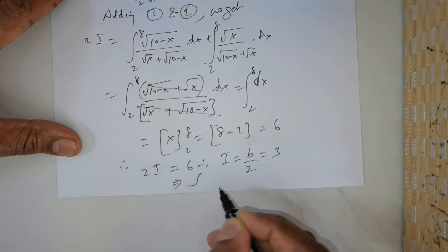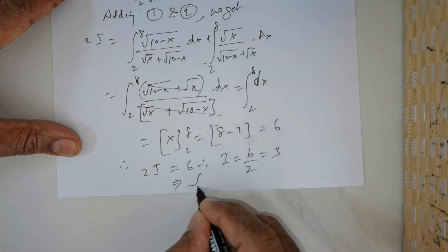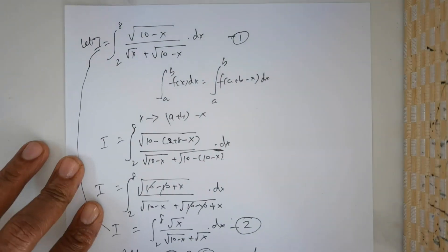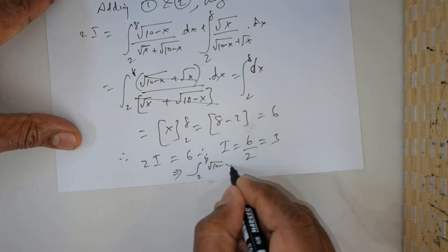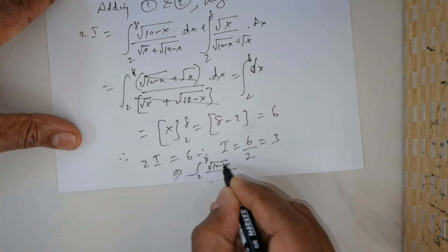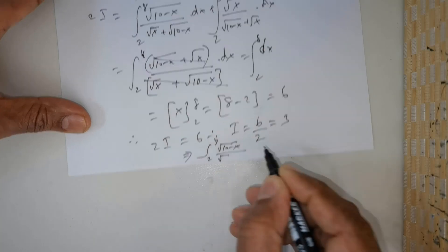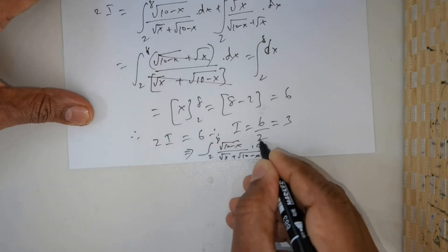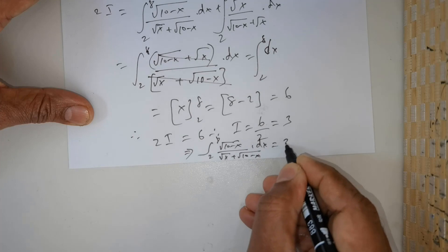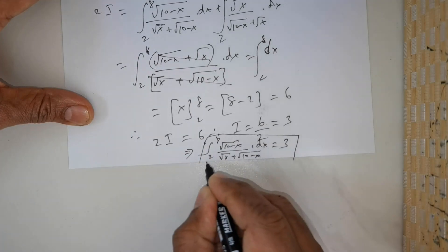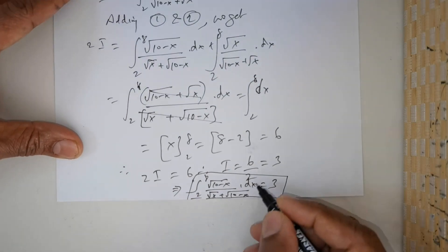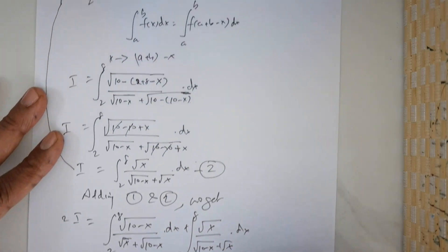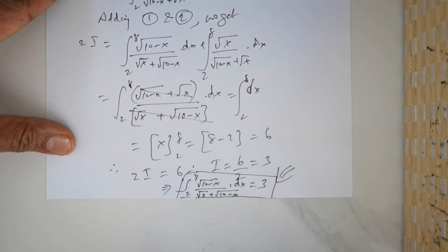So the final value: the integral from 2 to 8 of √(10 - x) divided by [√x + √(10 - x)] dx is equal to 3. Box the result so that the examiner is able to see all of these steps. Thank you.